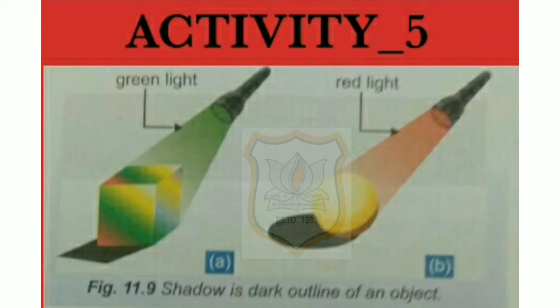What will you observe from this activity? We observe that the color of a shadow does not change with the change in color of the source of light, or the color of the opaque object placed in the path of the light. Conclusion: A shadow is a dark outline of an object. Other than its shape, no details of the object can be seen on the shadow.